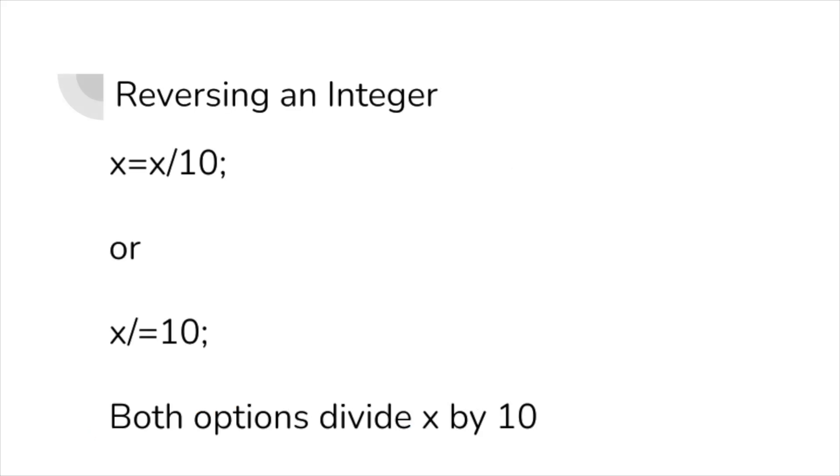Since we've done that, we just have to divide the original number by 10 to ensure that when we loop this again, our reversed number actually adds on the next digit of the original number.